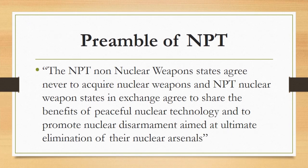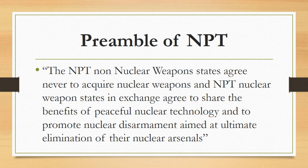Now, the preamble of NPT. The preamble is basically an introductory part of a treaty or agreement that states its purpose, aims, and justification. According to the preamble of the Nuclear Non-Proliferation Treaty, the NPT non-nuclear weapon states agree never to acquire nuclear weapons, and the NPT nuclear weapon states, in exchange, agree to share the benefits of peaceful nuclear technology and to promote nuclear disarmament aimed at the ultimate elimination of their nuclear arsenals. So non-nuclear signatories must never acquire nuclear weapons, while those who already possess them must work toward complete elimination.